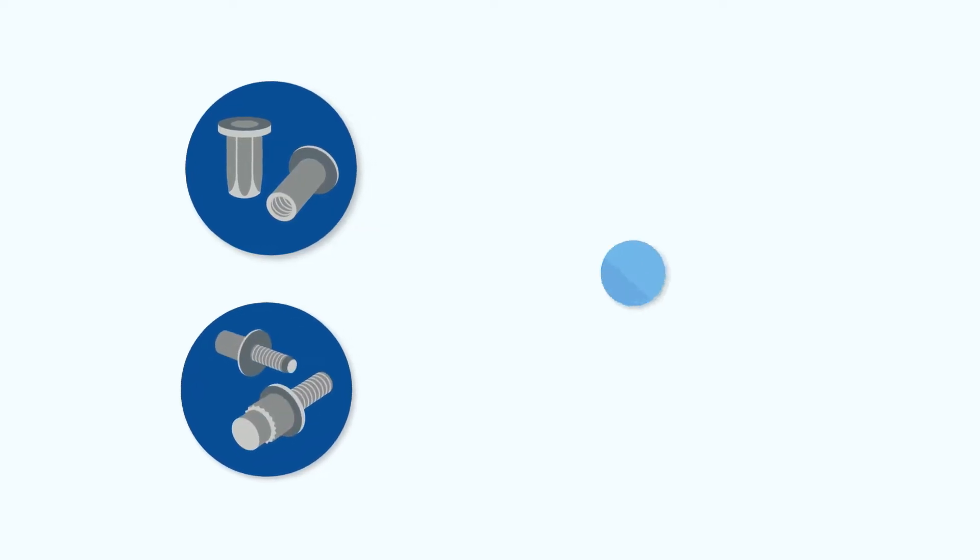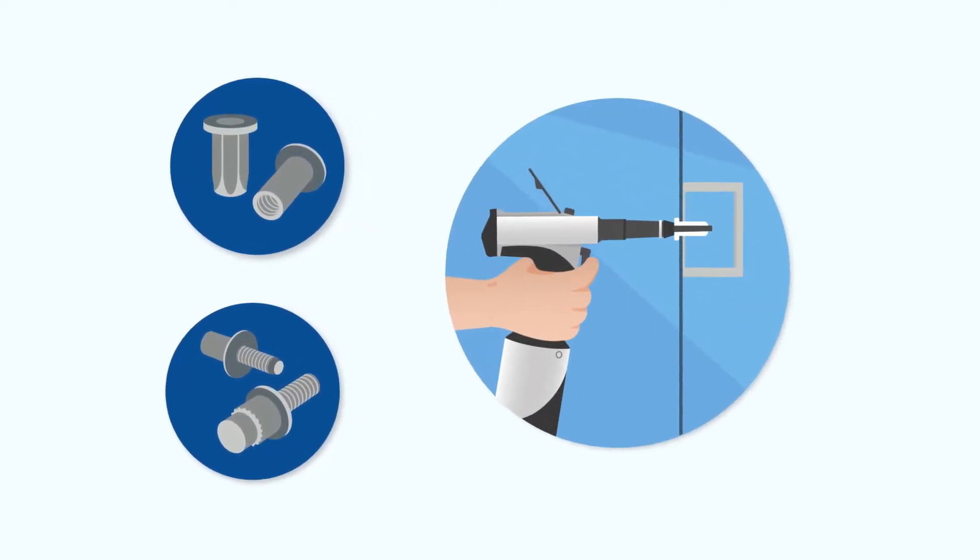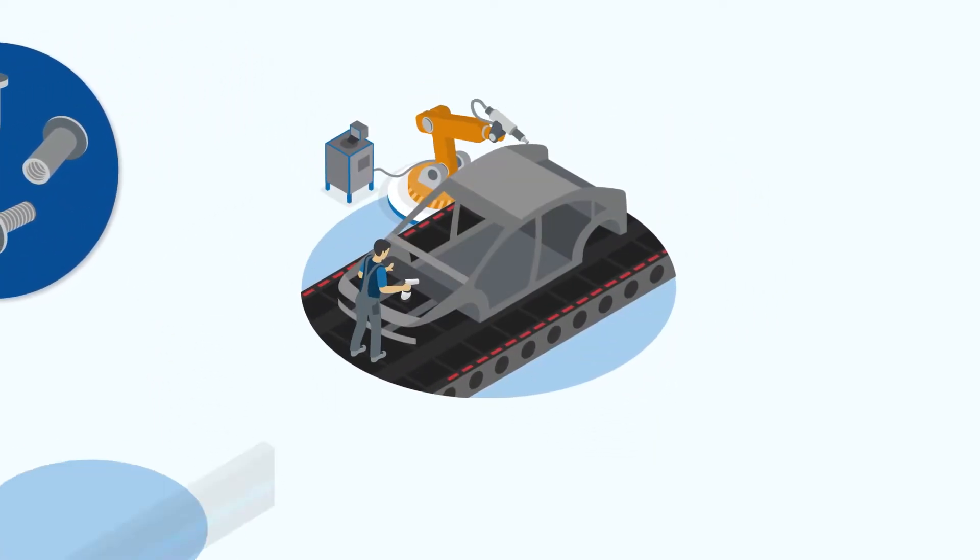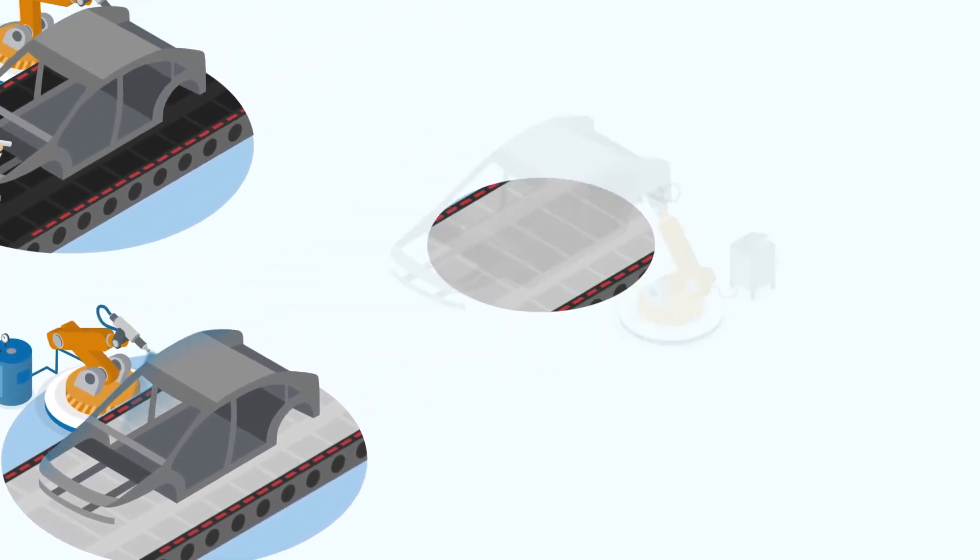Rivkulp line rivet nuts and studs allow installation with access from only one side, either before or after the painting or treatment operations of the application. They are compatible with metallic and composite materials and can be integrated at all stages of your production process.